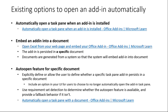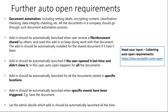Besides these existing options, we still receive different auto-open requirements. I have put a survey link here and I hope you can help us understand your scenarios and give feedback on your auto-open requirements. There are a couple of requirements we are gathering now. The first is document automation — many customers would like to do data classification, document classification, check-in, encryption, label setting, and data integrity checks.